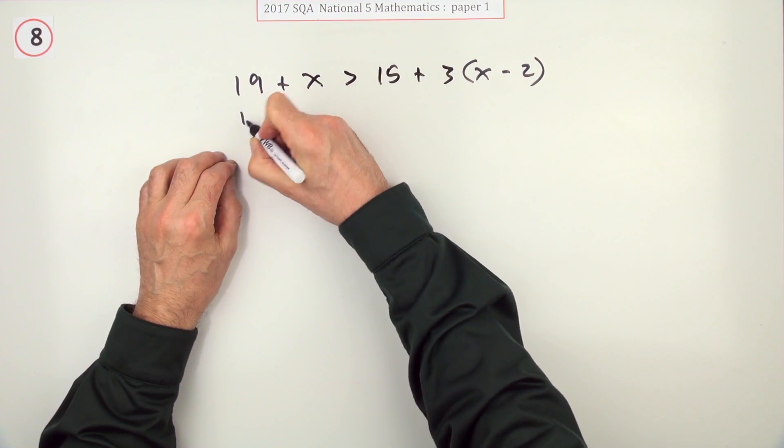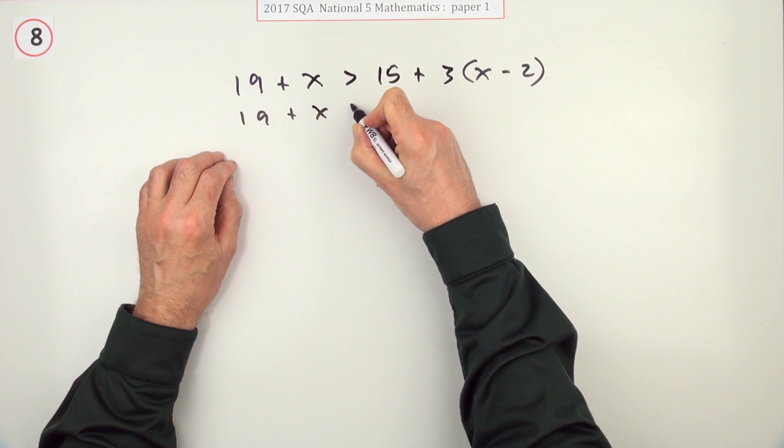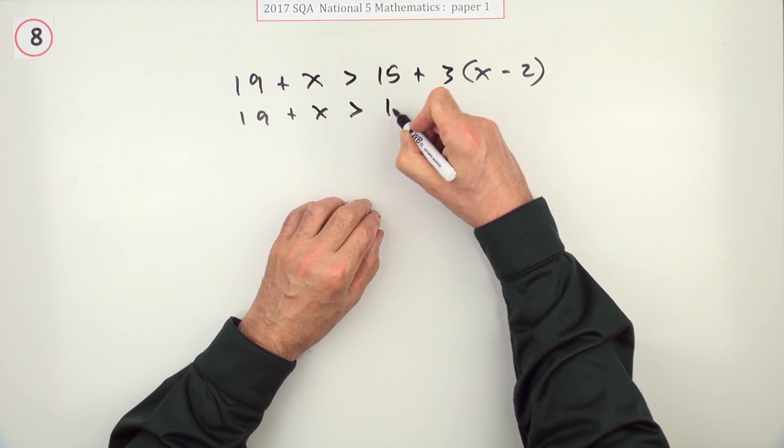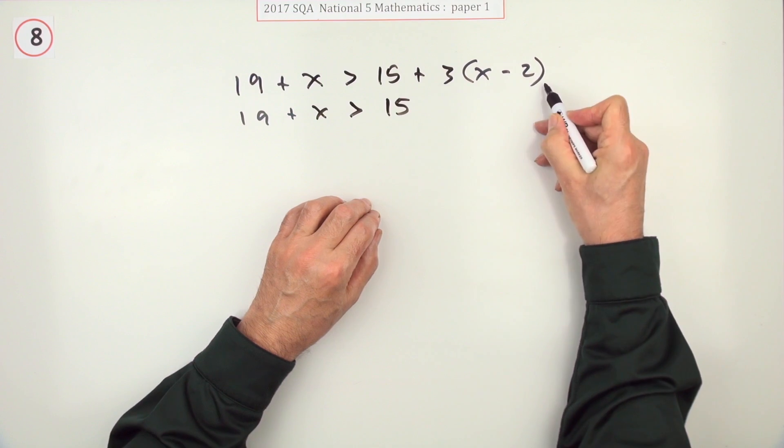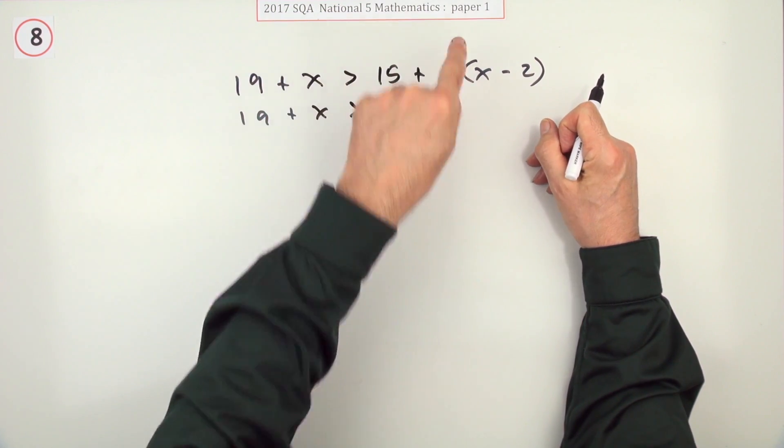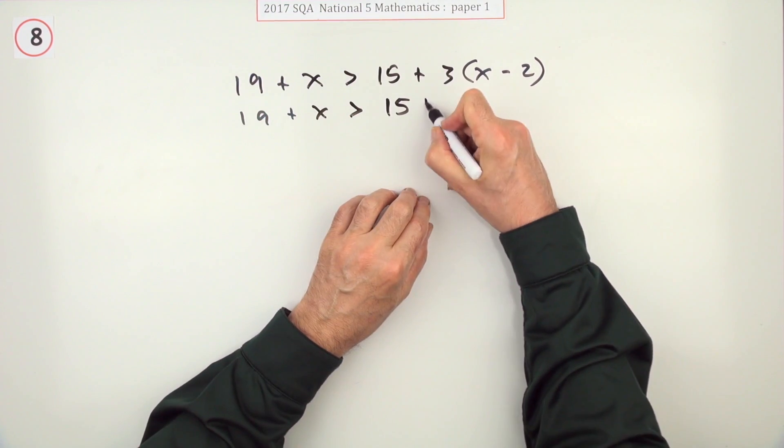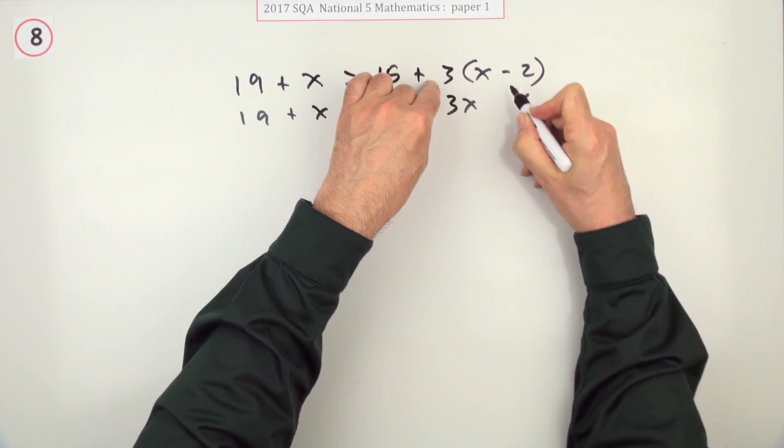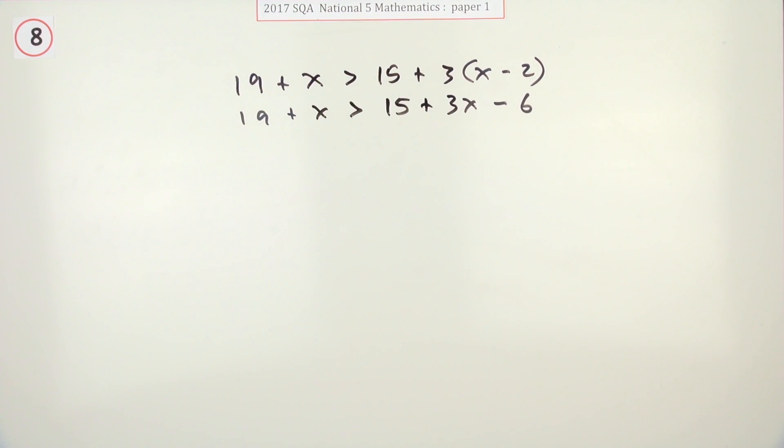You just set about it as if it were an equation. But remember to keep writing greater than in this case. Well the first thing you have to do is multiply those brackets. Don't add the 15 and the 3. You multiply first. So 3 times the x is 3x. 3 times the 2 is 6. And that's a negative. So take away 6.